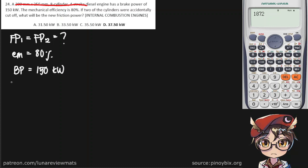So the formula for friction power is simply the indicated power minus the brake power. BP is already given, so we just need to find the indicated power using the mechanical efficiency formula.